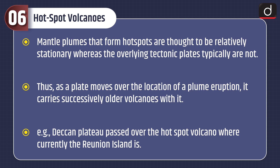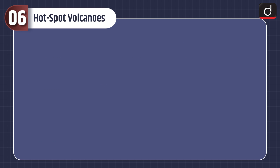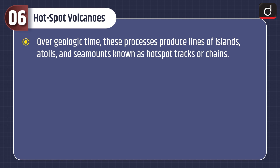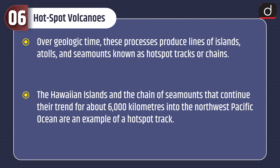For example, the Deccan Plateau passed over the hotspot volcano where currently the Reunion Island is. Over geologic time, these processes produce lines of islands, atolls, and seamounts known as hotspot tracks or chains. The Hawaiian Islands and the chain of seamounts that continue their trend for about 6,000 km into the northwest Pacific Ocean are an example of a hotspot track.